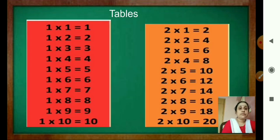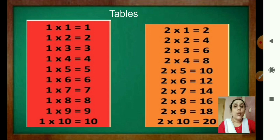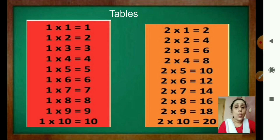Now we will be revising the tables of 1 and 2. Do you remember? We have done these in first standard. Let's read the table of 1 together: 1 one is 1, 1 two is 2, 1 three is 3, 1 four is 4, 1 five is 5, 1 six is 6, 1 seven is 7, 1 eight is 8, 1 nine is 9, 1 ten is 10.